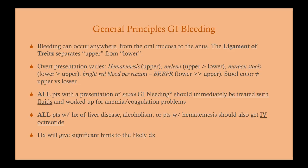All patients with a presentation of severe GI bleeding should immediately be treated with fluids and worked up for anemia and coagulation problems. Patients with low blood pressure are considered to have a severe GI bleed and need immediate treatment. You're not going to kill someone by giving them a bolus — remember to attend to your ABCs, so when a patient is bleeding severely or has low blood pressure, you need to attend to their volume status first.